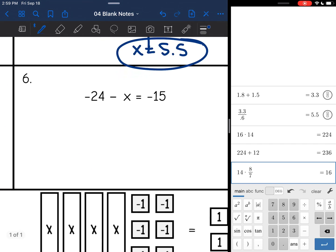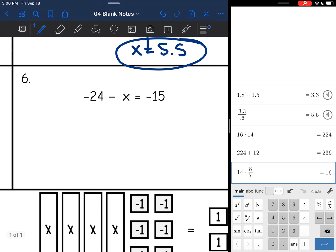Okay, number 6. I want to get x by itself, so I need to get rid of the constant that is attached to it first. I need to make a 0 with the negative 24. So I'm going to add 24 to both sides.